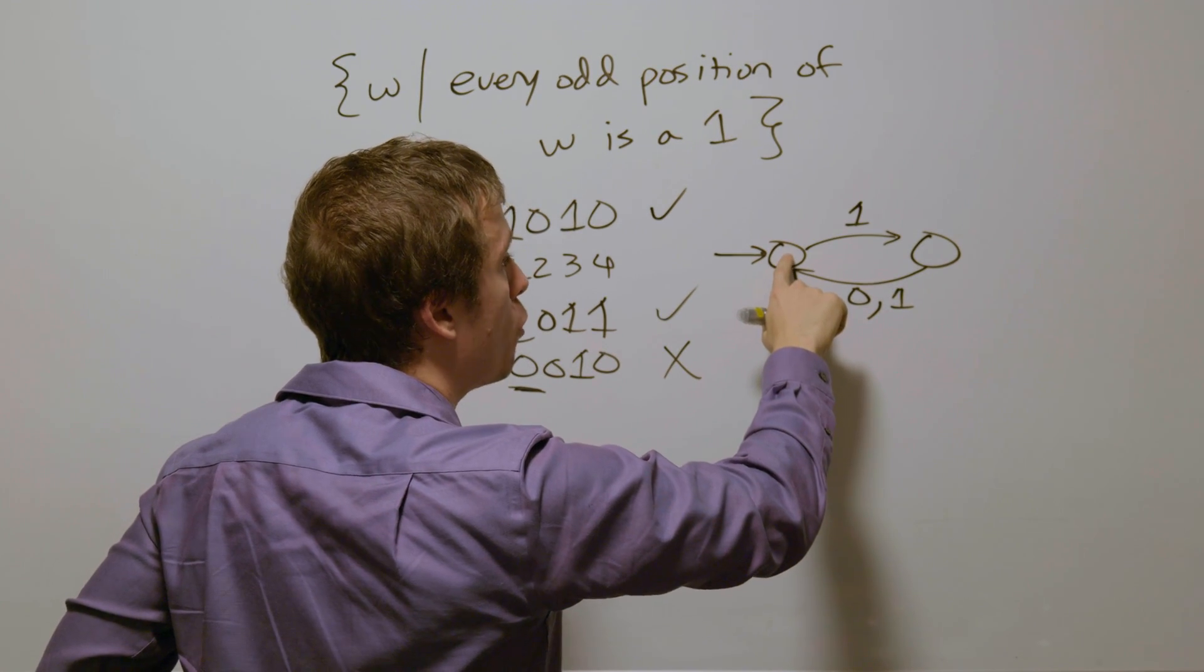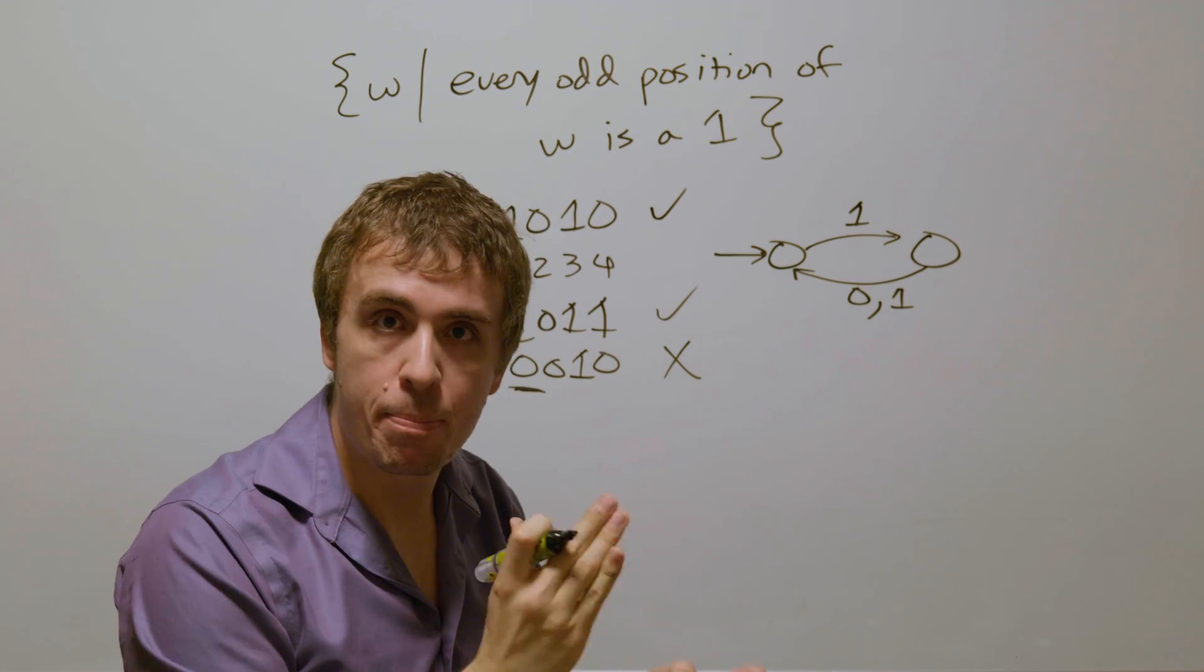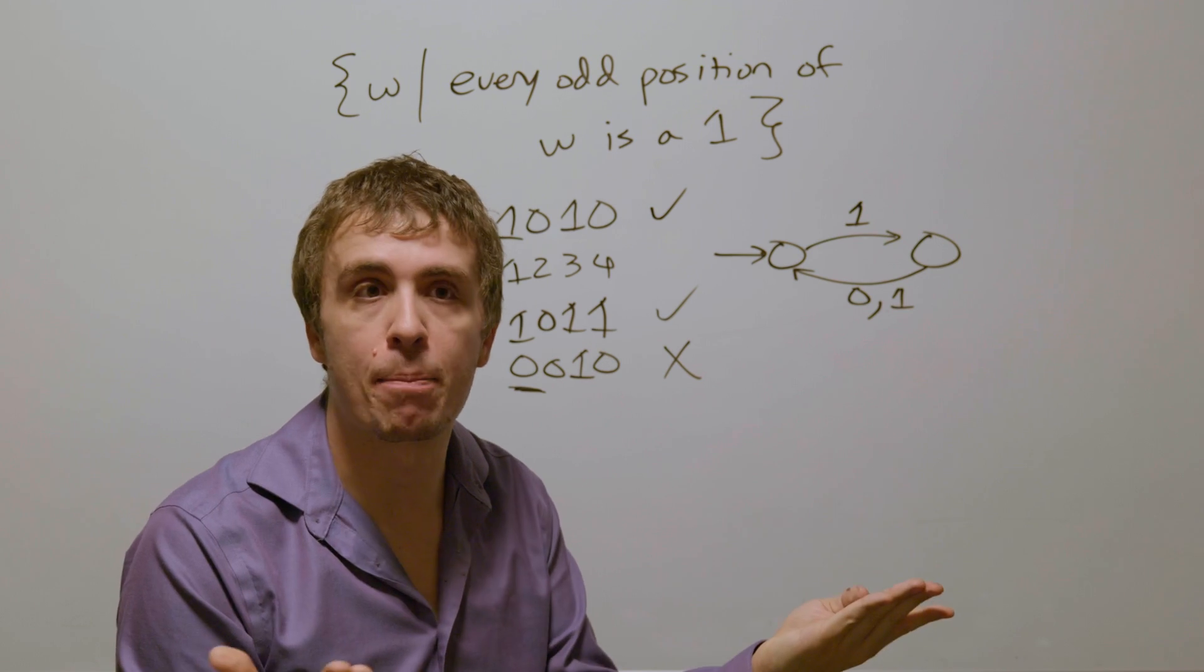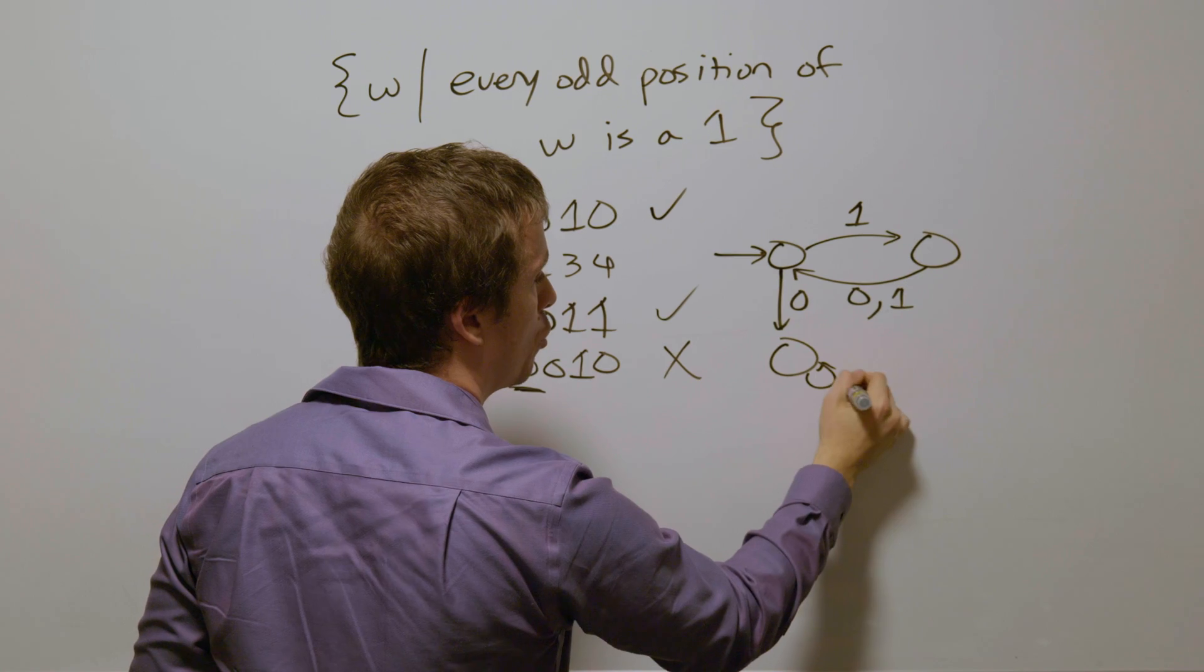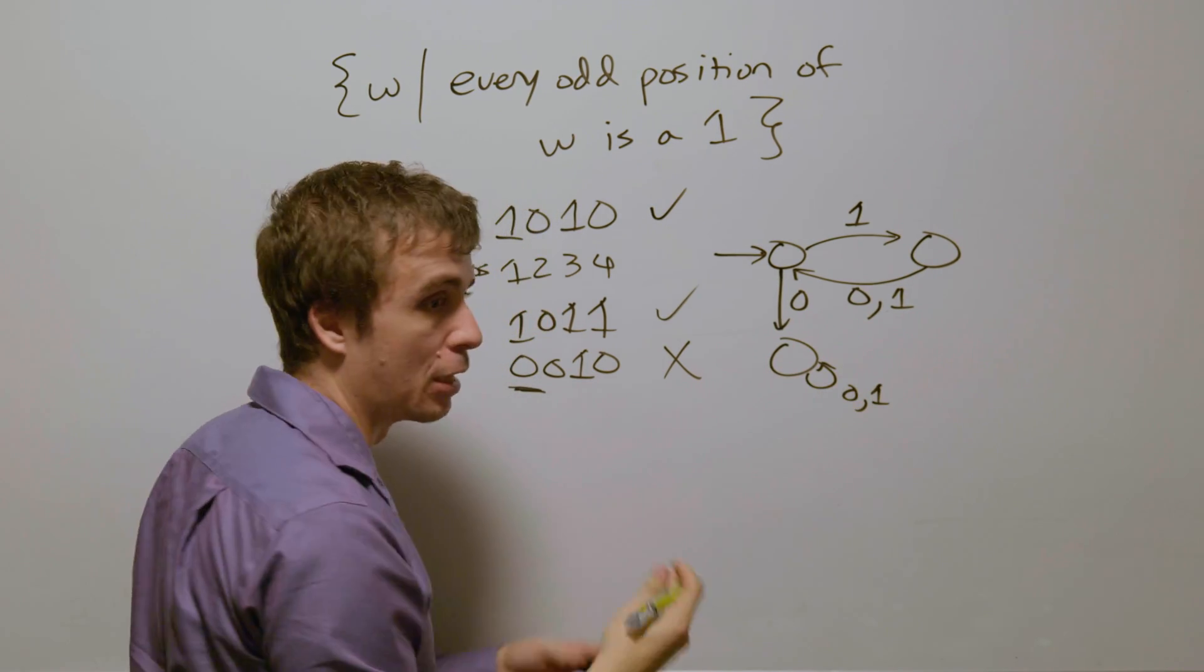If we have a zero right here, which means that an odd position is a zero, that should not be accepted. And so therefore needs to go to a dead state, which will read through the rest of the characters and not accept.